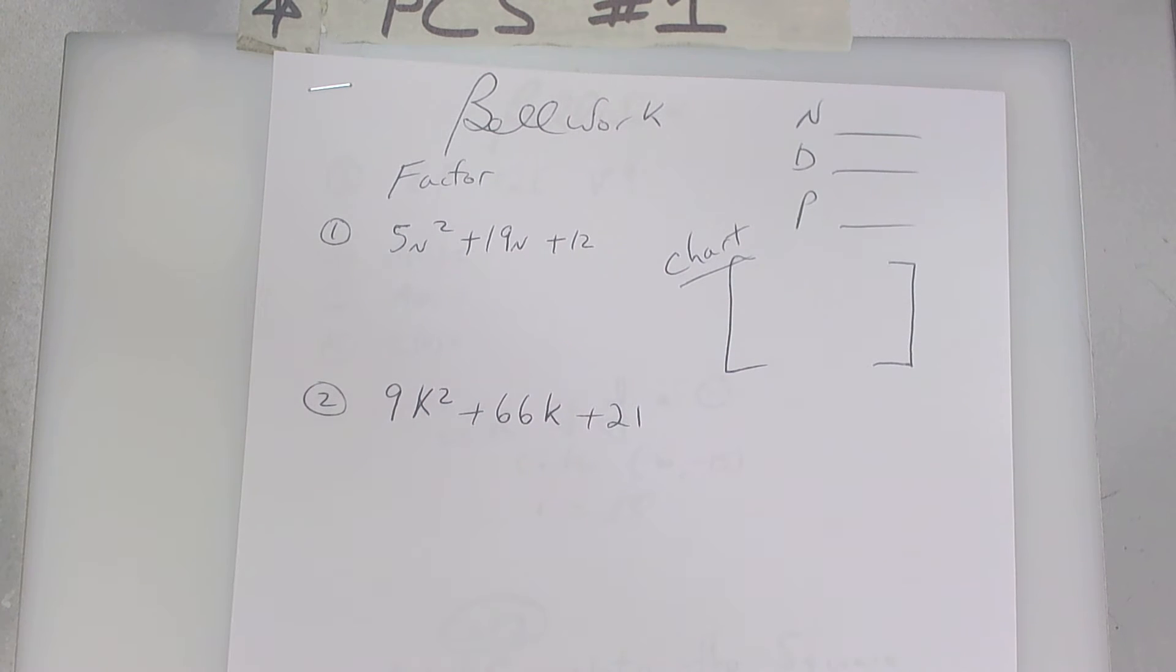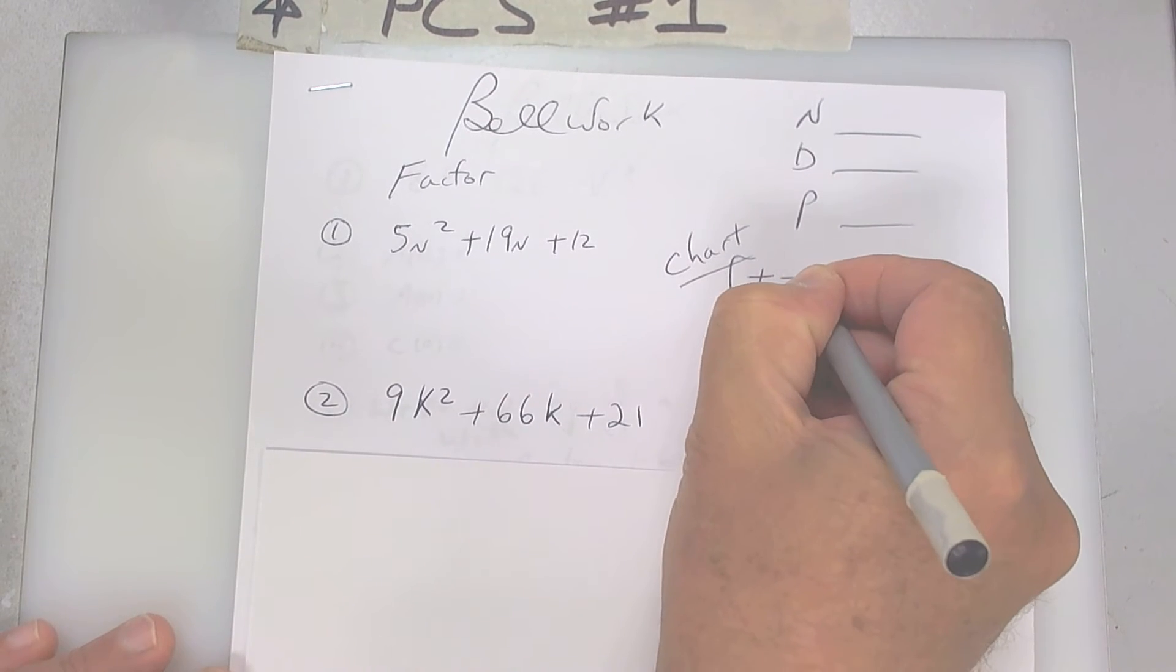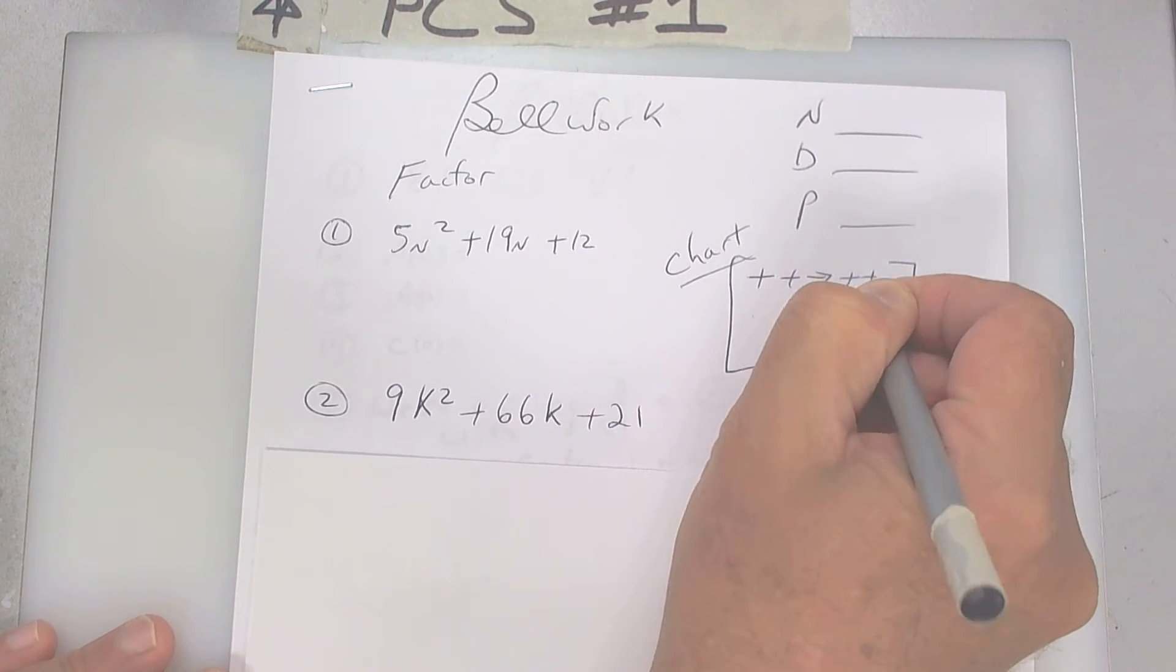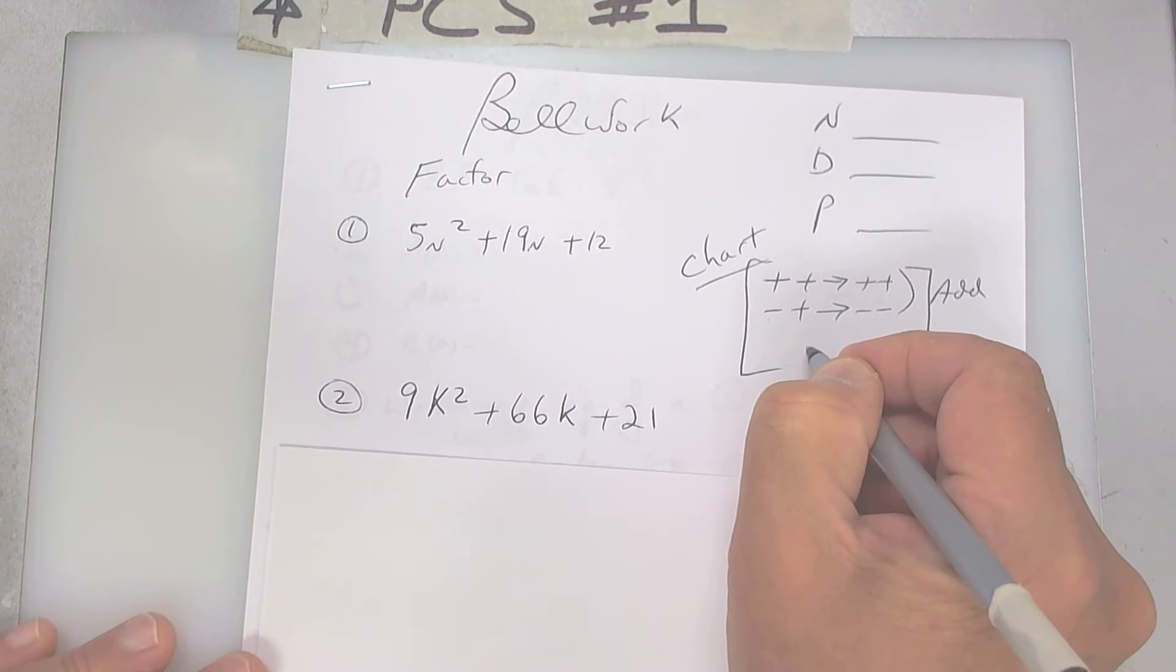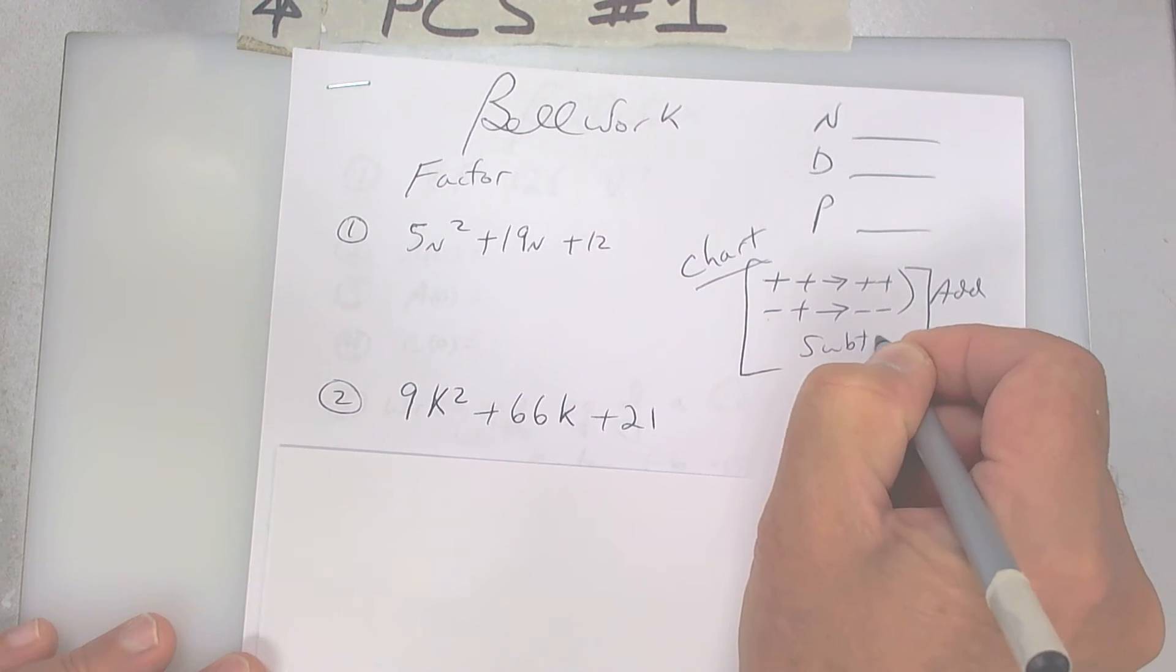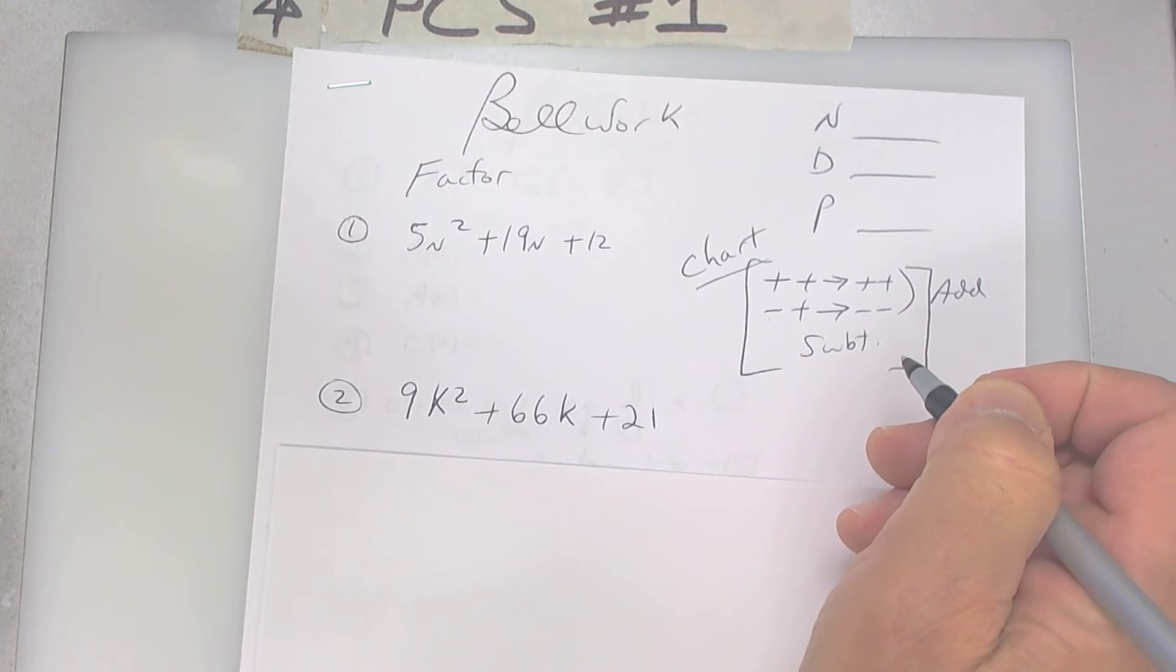Okay, hello and good morning. Let's talk about today's bell work. It says fill out the chart. So if you have two pluses, it's going to be two pluses. If it's a minus and a plus, it's going to be two minus. This is add, anything else is subtract.